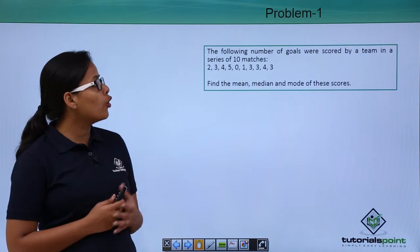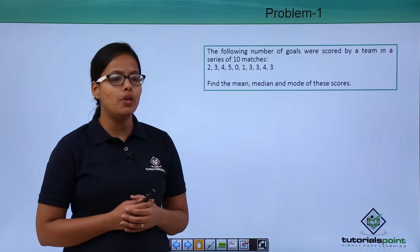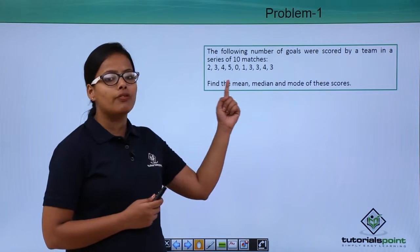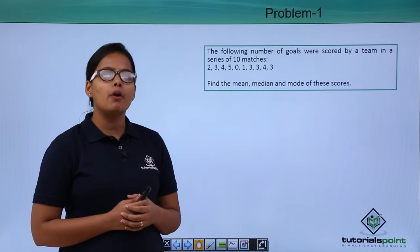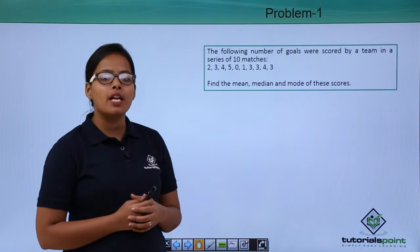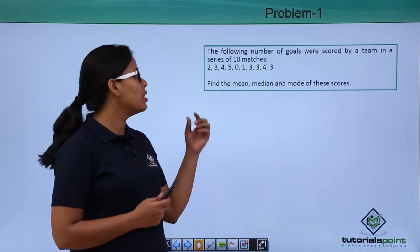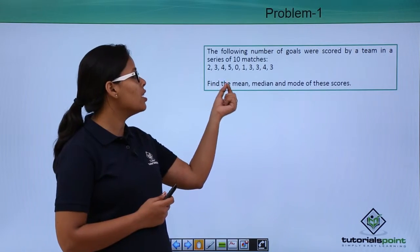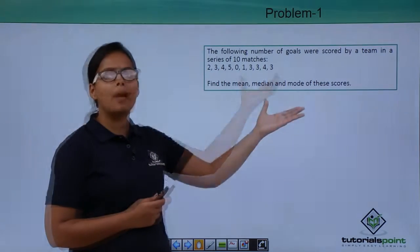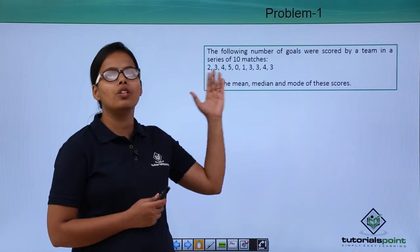This problem says the following number of goals were scored by a team in a series of 10 matches. In the first match, they scored 2 goals. In the second match, they scored 3. In the third match, they scored 4. In all 10 matches, they scored these goals.